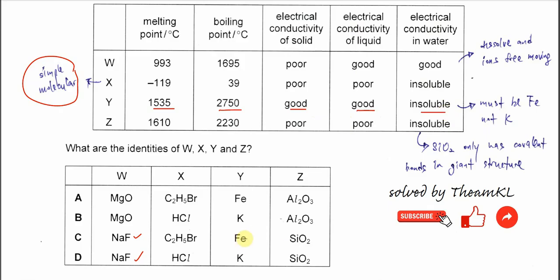So from here, we can choose already. So iron cannot really dissolve in the water. It's insoluble, so this is the one. Potassium is dissolved, so cannot be the answer because it's insoluble in water. Potassium dissolved.